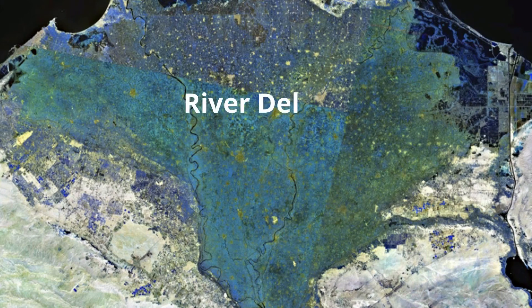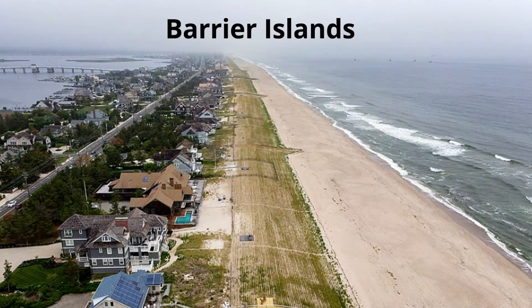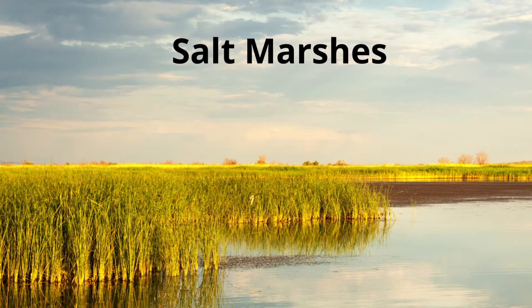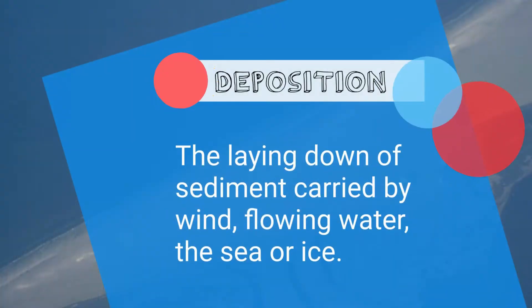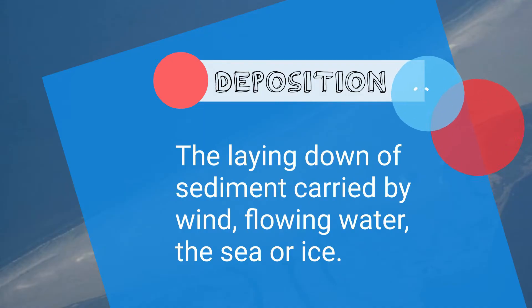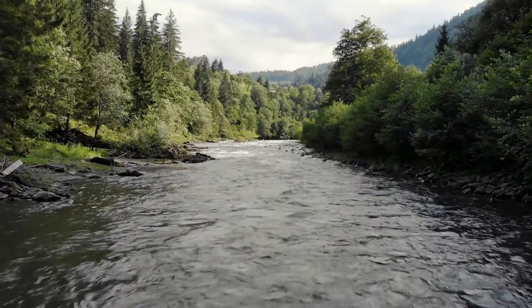Let's take a look at river deltas, barrier islands, and salt marshes, which are landforms created by deposition. Deposition occurs when rivers, streams, and the ocean drop sediments and create landforms.